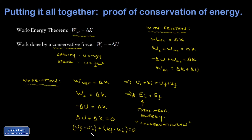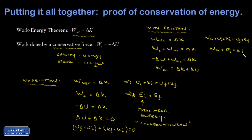Going through the same process — breaking the deltas into final minus initials and moving all the initial terms to one side — gives: work by non-conservative forces plus U initial plus K initial equals U final plus K final. This is a generalization of conservation of energy, where the work done by non-conservative forces plus the initial mechanical energy equals the final mechanical energy. In the context of friction, you start with some initial energy, this term tells you how much energy is removed by friction, and the result equals the final total energy.